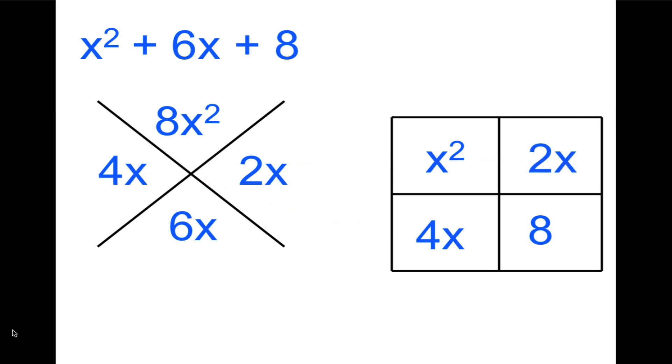What makes x²? It's x times x. x times what equals 2x? x times 2. x times what equals 4x? x times 4. So the answer is x plus 4 times x plus 2. I know I got that bit backwards, but there you go.